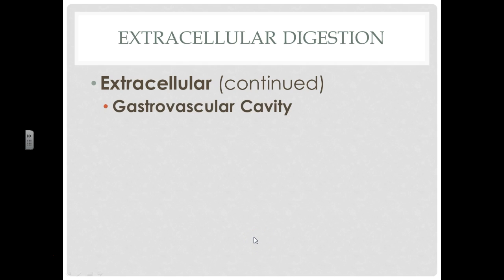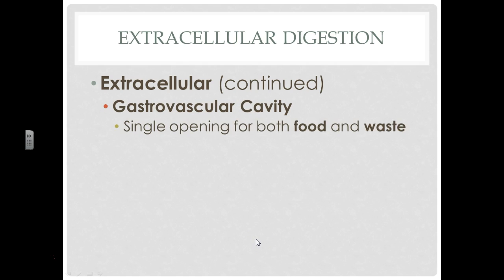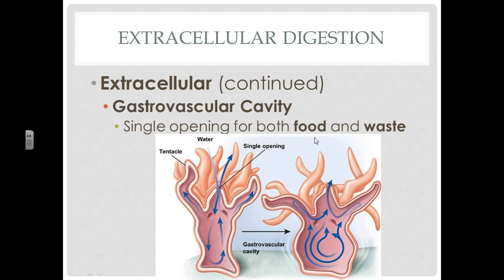So, extracellular digestion — there are a couple different ways we can do this. The first one is called the gastrovascular cavity. This means that there is a single opening for both food and waste. A perfect example of this is the sea anemone — they have one hole. Food comes in, it's broken down, digested, absorbed into the body, and then out the exact same hole. They eat and poo through the same hole.